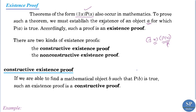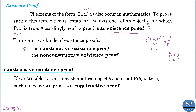So to prove such a theorem we have to find x equal to a such that p of a is true. If we can find such an a, then we have proved this theorem. Such a proof is called an existence proof. Now there are two kinds of existence proofs: the constructive existence proof and the non-constructive existence proof.